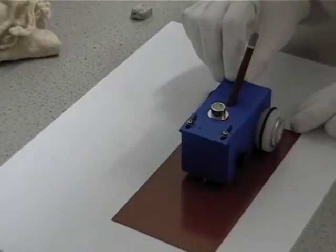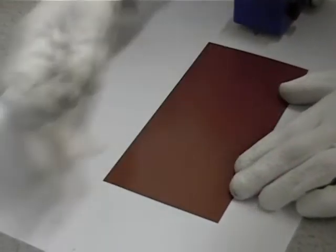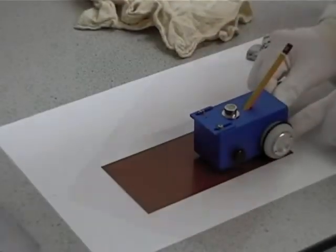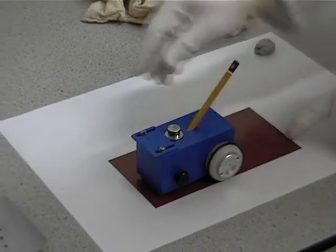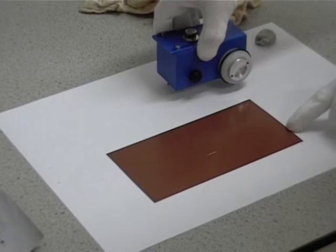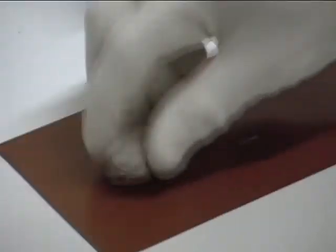The trolley is then pushed with a steady motion and the sample inspected for scratches. Again, in this case, the 3H pencil left no mark, but the 4H made a clear scratch. The pencil hardness is quoted as the hardest pencil which does not leave a mark, so in this case, 3H.